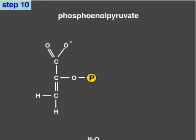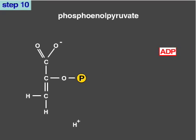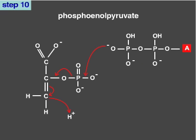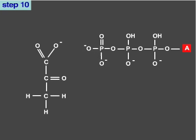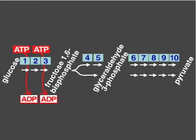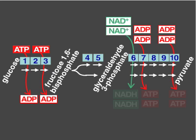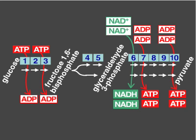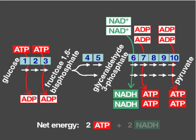In the 10th and last step of glycolysis, the enzyme pyruvate kinase transfers the high-energy phosphate group to ADP, forming ATP and pyruvate. In the second half of glycolysis, many of the reactions release energy, captured in the form of ATP and NADH. Overall, the net energy produced in glycolysis from a single molecule of glucose is 2 molecules of ATP and 2 molecules of NADH. The chemistry of glycolysis is conserved all the way from bacteria to animal cells.